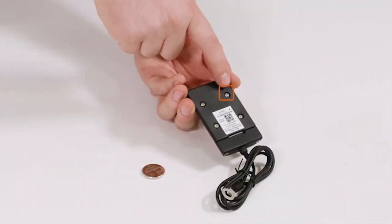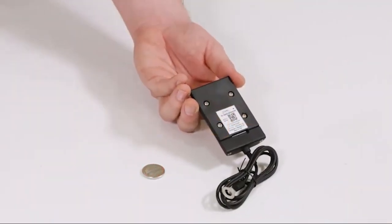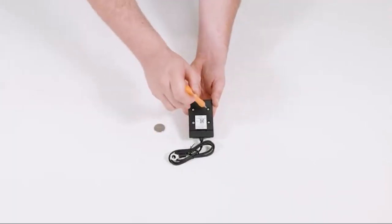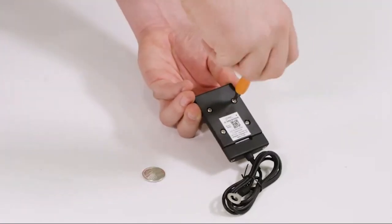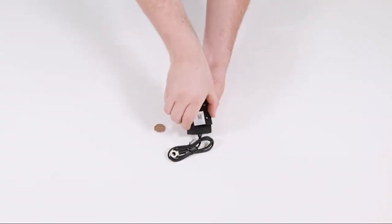With the sensor successfully paired, it's time to install the battery. Using a Phillips head screwdriver, loosen the four Phillips head fasteners on the back of the module and remove the cover plate.